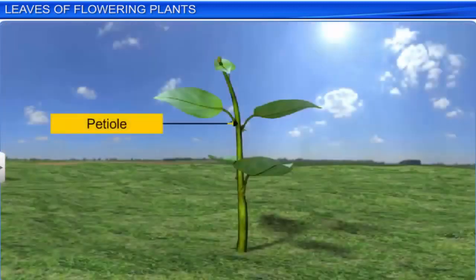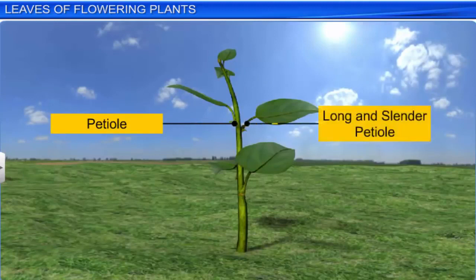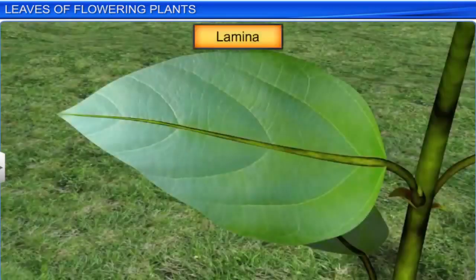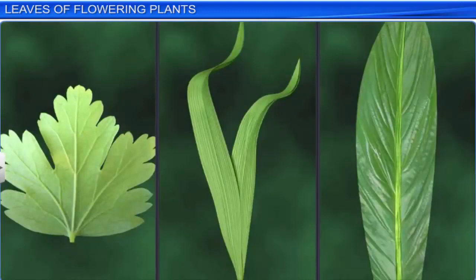The petiole helps the leaf to tilt in the direction of light. If the petiole is long and slender, it helps the leaf to move in the air and bring fresh air to the surface. The lamina is the expanded green portion of a leaf; however, its shape, apex, surface, margin, and extent of incision vary from plant to plant.